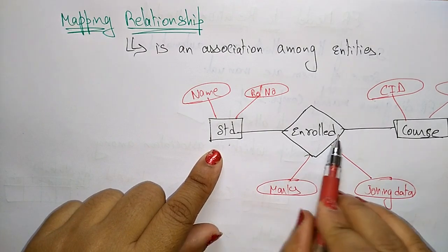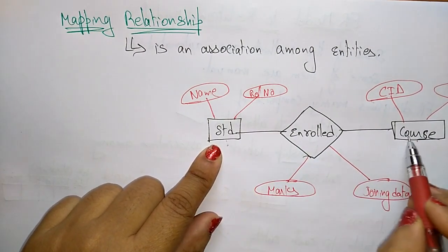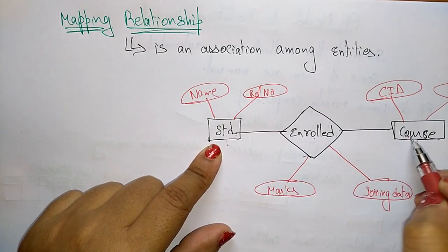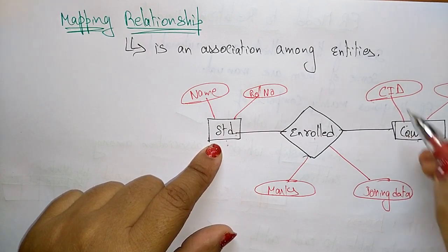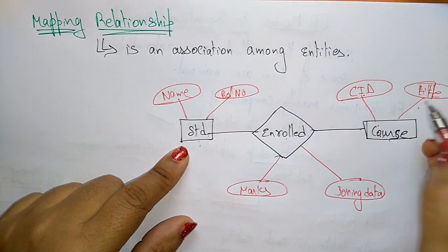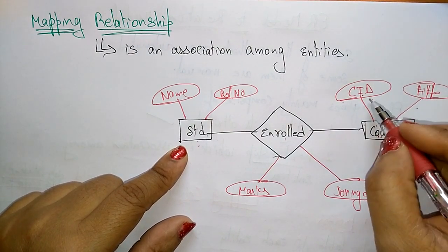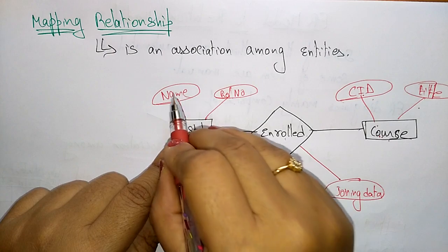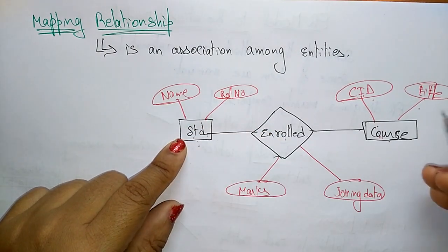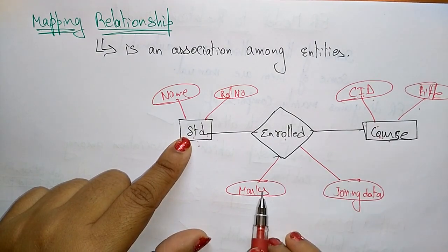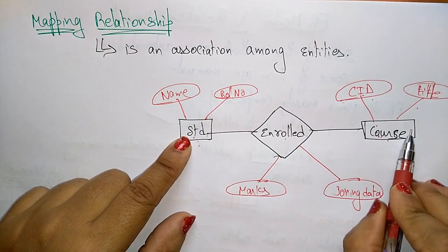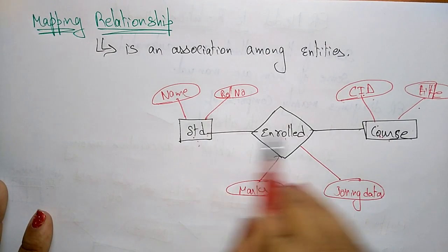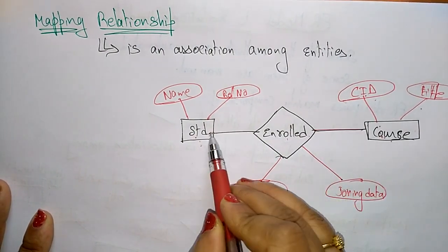Here, a student is enrolled for a course. A student may enroll for more than one course — they may do C, C++, or Java. For each course, they have a course ID and the title. For example, course ID 01 and title is C++, course ID 02 and title is Java. Each student has a name as well as a roll number. The student enrolls based on the marks they get and the joining date.